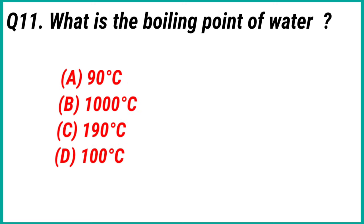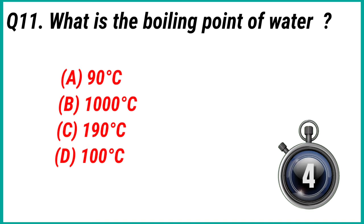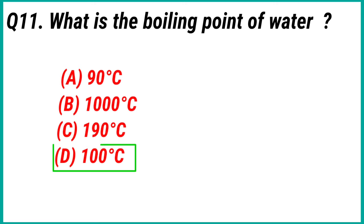Question 11: What is the boiling point of water? Answer option D: 100 degrees Celsius.